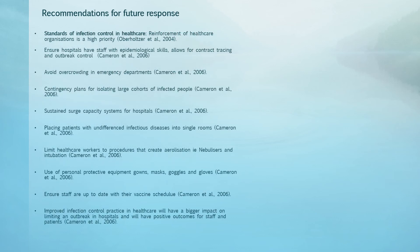My recommendation for infection control practices in healthcare will be implementing evidence-based strategies, which include hospitals ensuring they have staff with epidemiological skills, as this will help with contact tracing and controlling outbreaks. Other measures include avoiding overcrowding in emergency departments, having contingency plans for isolating large cohorts of potentially infected people, ensuring hospitals have a sustained surge capacity, and placing patients with unknown infectious diseases into single rooms. We should limit exposure during aerolising procedures and ensure proper use of PPE including gowns, masks, goggles and gloves, and ensuring staff are up to date with their vaccine schedule. Improving infection control procedures in healthcare will have a bigger effect on reducing new outbreaks, with positive outcomes for patients, staff and the community.